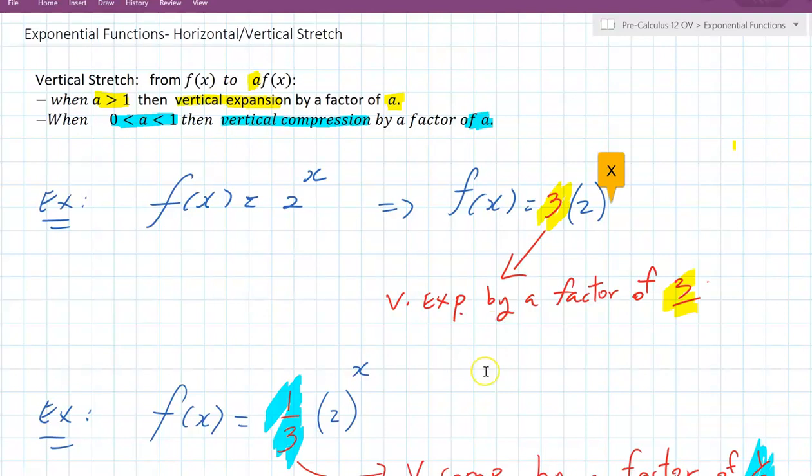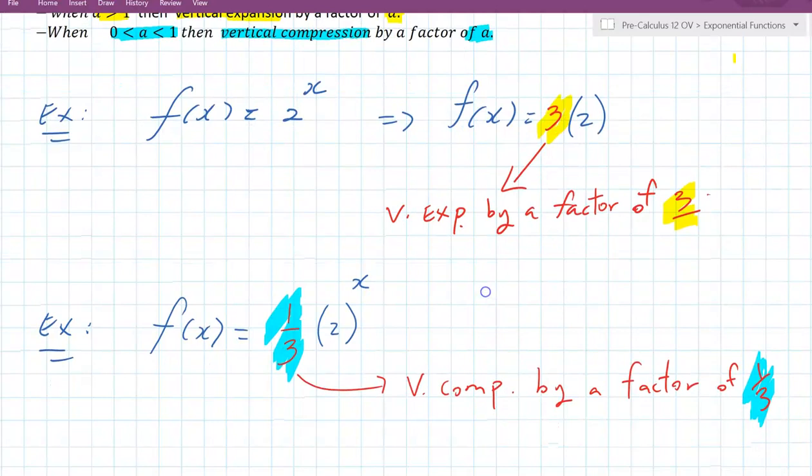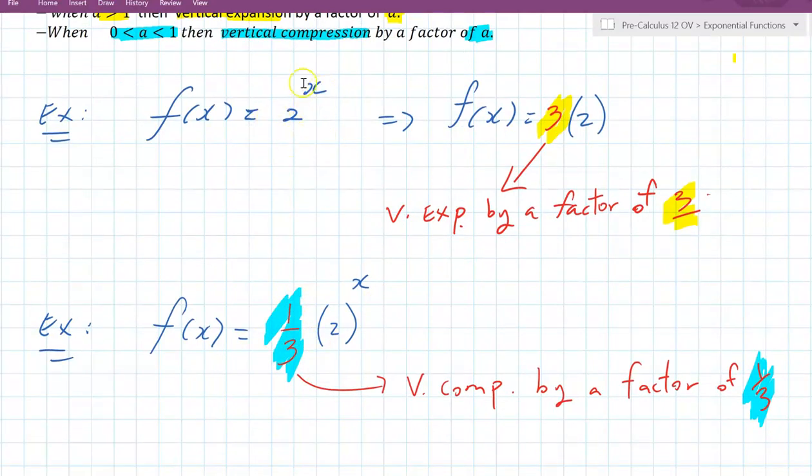And I'm going to show you a graph of that. And then we do the same thing with the 1 third. So if there's another example, we have an original 2 to the x. Now we're going to put 1 third in front. This 1 third represents the vertical compression by a factor of 1 third. That means that every single y-value for the graph, all the points on the original graph, will be compressed by a factor of 1 third.